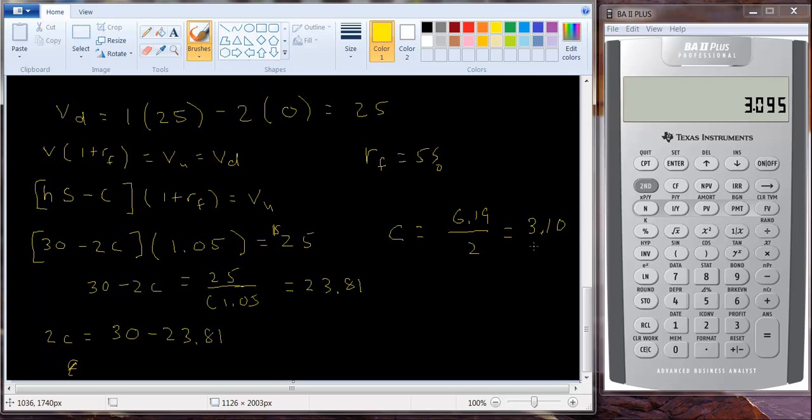So, what do we need to know about this $3.10? If the call option doesn't sell for $3.10, it will be possible to earn more than a risk free interest rate without taking any risk. And that's just something that can't happen in the financial markets. What happens in the financial markets is people see this mispricing and they take advantage of what's called an arbitrage opportunity.